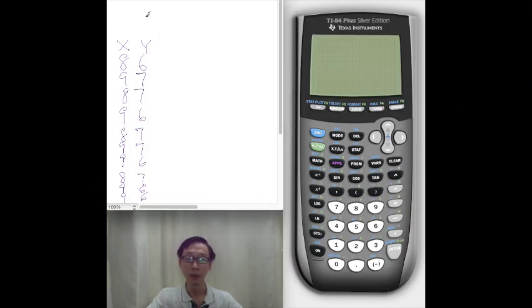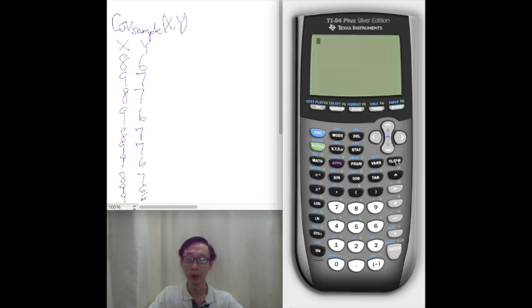Okay, so let's try to learn how we can calculate the sample covariance of two random variables x and y. Here we have a TI-84 calculator, and just as a refresher, let's recall what is the definition of the sample covariance for a set of observations.